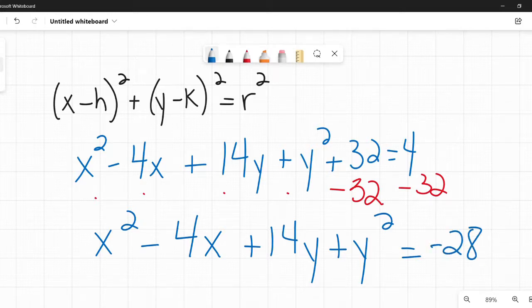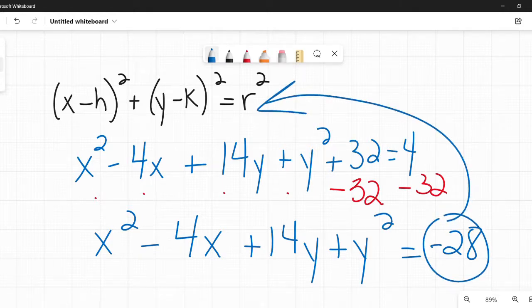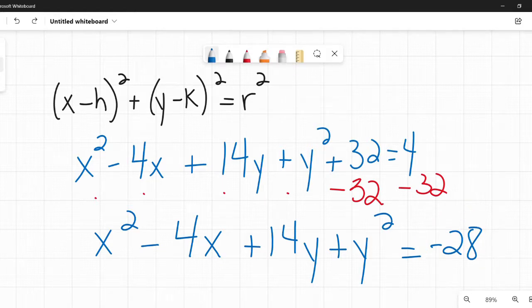Now, any of you astute mathematicians out there might look and say, but that needs to be a radius squared and it's negative. This cannot be, we cannot have a square that is negative. I say, hold your horses, mathematicians, all will be revealed.